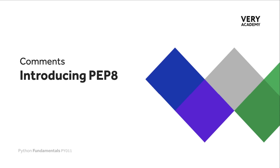PEP 8 is a document that provides guidelines and best practices on how to write and present Python code. The important word here is guideline — you don't necessarily need to follow this. But by having this guideline, and many do try to follow these guidelines, it means that any Python code you read will be styled in a particular way that you are comfortable with, thus potentially making the code more readable.